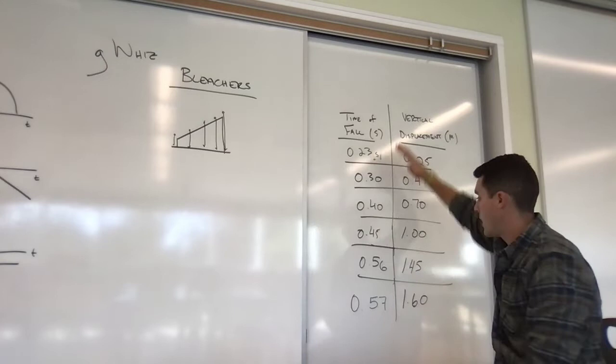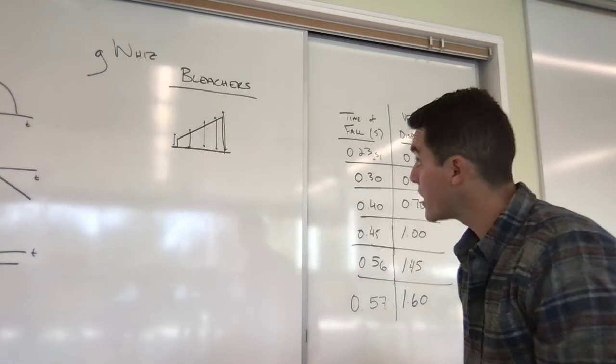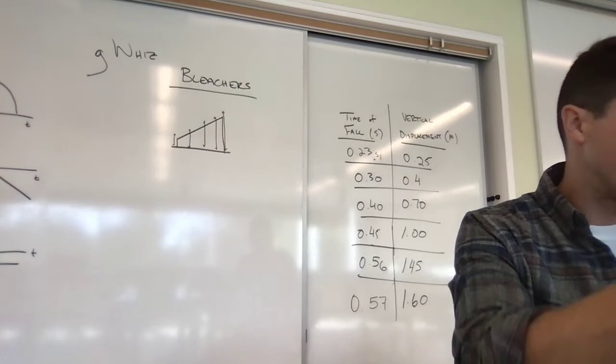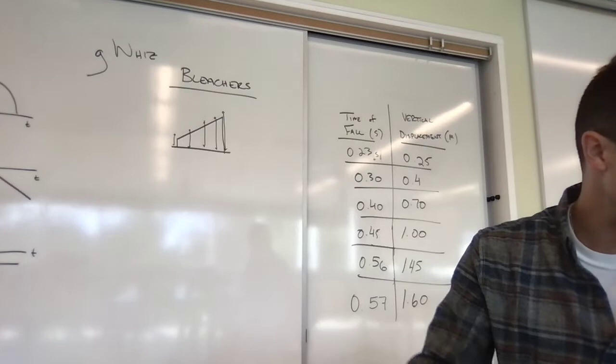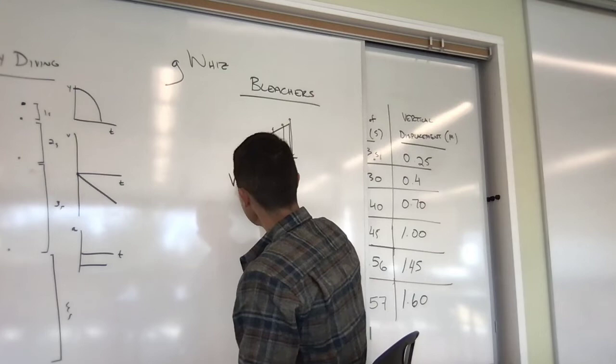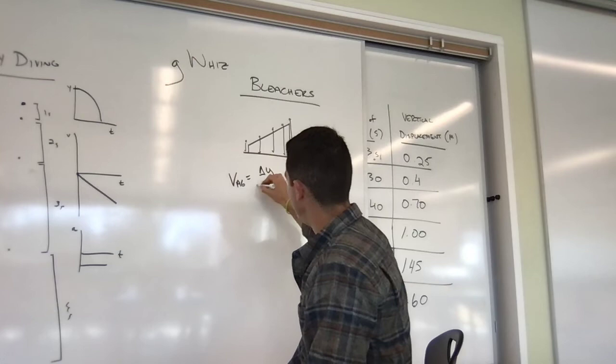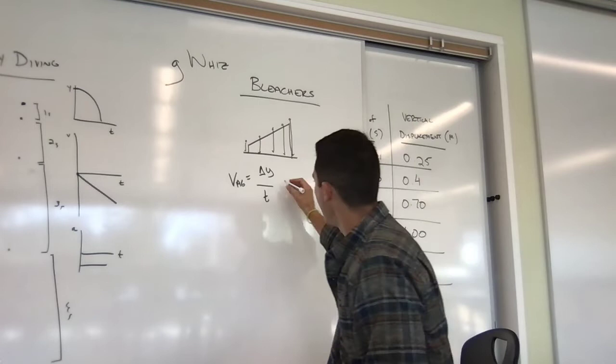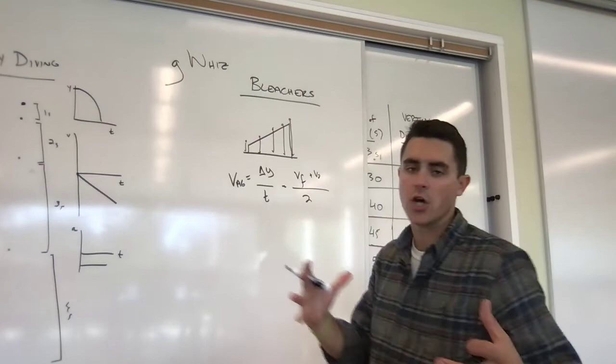Now, the big question we were asked here, there are two big goals. The first big goal is to determine the average velocity for the objects at different heights. That's goal number one. And if you remember, average velocity equals two different things. I can do either change in vertical position over time.